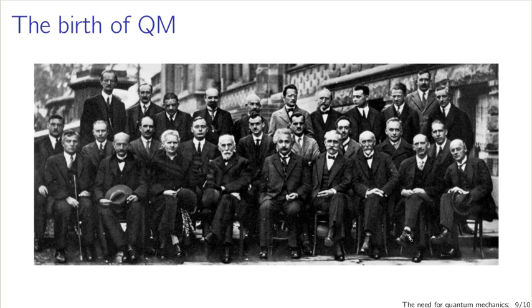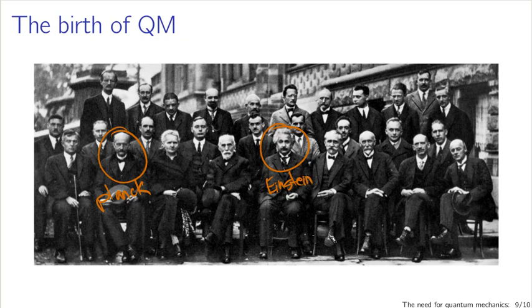This is that famous photograph that I mentioned. This is really the group of people who first built quantum mechanics. Now, I mentioned three key experiments. The black body spectrum. This guy figured that out. This is Planck. The photoelectric effect. This guy, who I hope needs no introduction. This is Einstein. Figured that out. This is the paper that won Einstein the Nobel Prize.